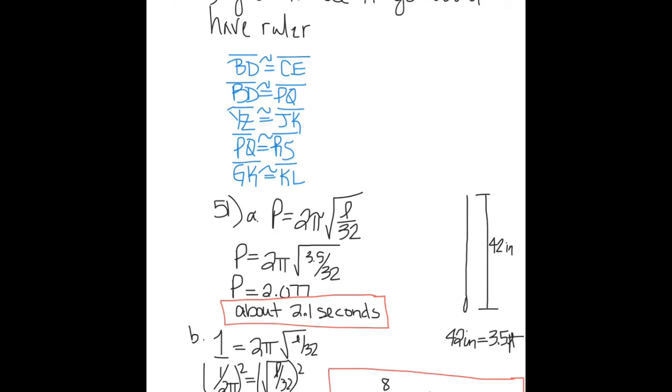Number 35: If you did not have a ruler, you could guesstimate or you could use a piece of notebook paper and just mark sides and slide it around. Your answers are probably very different than mine. You have to name just five pairs, so there could be multiple answers. I said congruent segments were: segment BD is congruent to segment CE, segment BD is congruent to segment PQ, segment YZ is congruent to segment JK, segment PQ is congruent to segment RS, and segment GK is congruent to segment KL. Again, your answers may be different than mine.